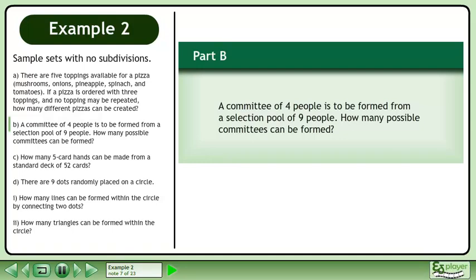In Part B, a committee of four people is to be formed from a selection pool of nine people. How many possible committees can be formed?